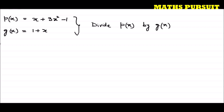Before doing our division, let us first recall the formula for these divisions. We know that dividend is equal to divisor into quotient plus remainder. We very well know this formula.